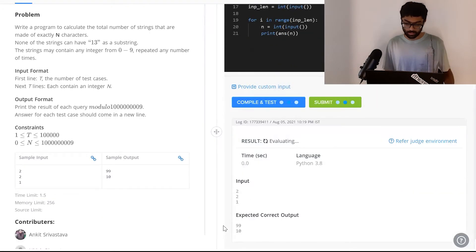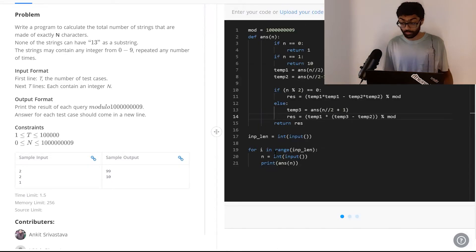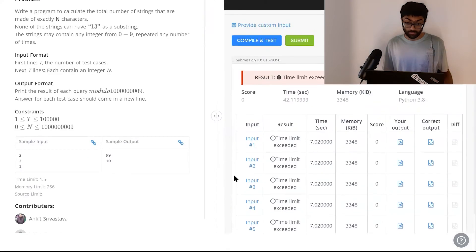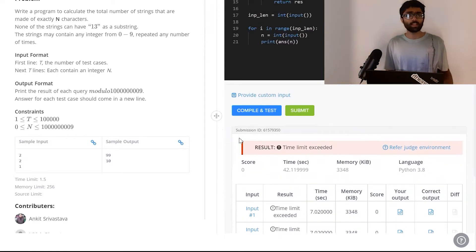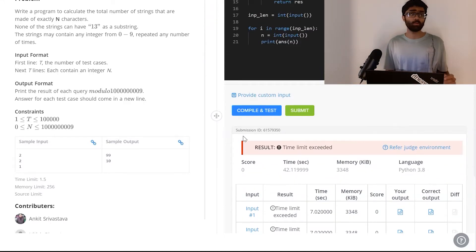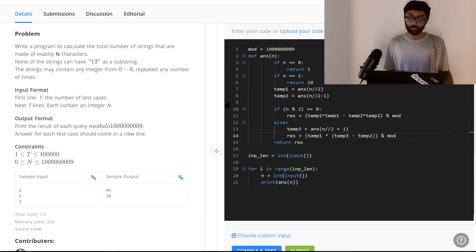If we compile and test it here, all our sample test cases will pass, but when we hit submit, our time limit will be exceeded. The time and space requirements for this problem are very tight. We've got to find a way to bypass that and solve it in less time. That's why we're going to use certain advanced programming techniques.